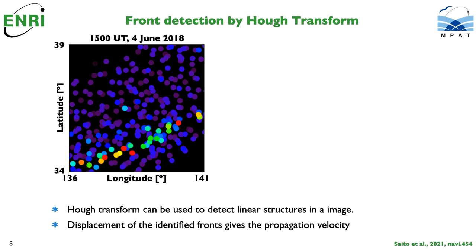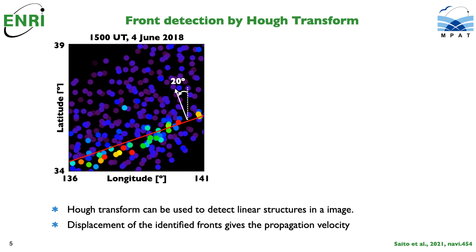We use the Hough transform to identify the ES layer. The ROTI map covers 5 degrees by 5 degrees in latitude and longitude. When the Hough transform is applied, a front directed to 20 degrees counterclockwise from the north was identified. The identified front fits well with the high ROTI region.